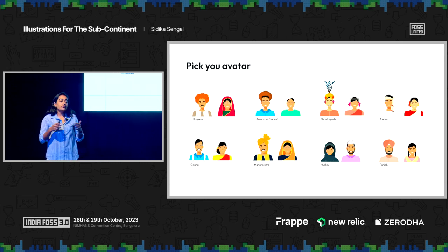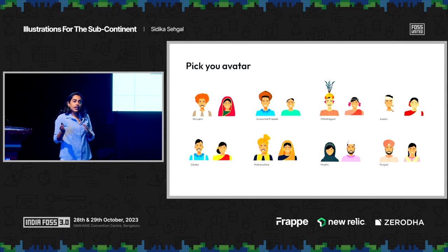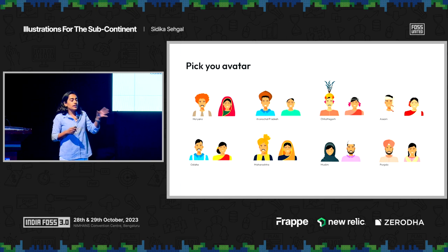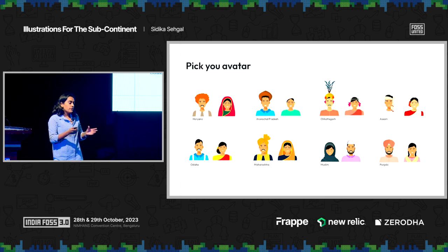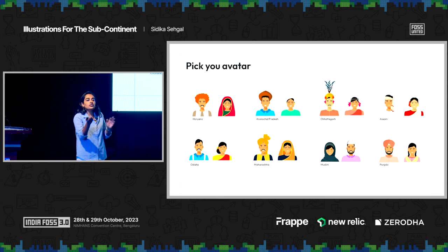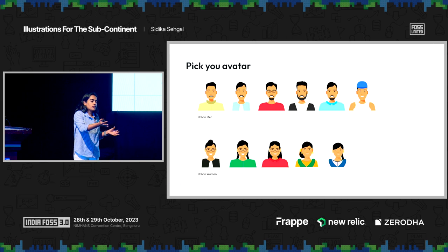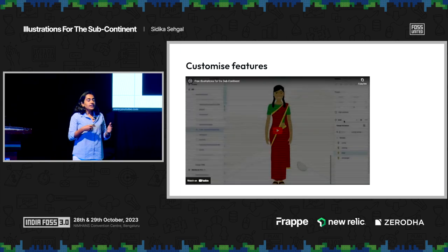When we started doing research for Subcontinental, we looked at photographs and found that we couldn't create just one Indian man and one Indian woman. Across the country, people look different, dress differently, and accessorize differently. So we created avatars for all the Indian states, and we also covered different ethnicities — you will see a Punjabi man and a Punjabi woman, a Muslim man and a Muslim woman. We also created avatars around professions — urban men and women, a construction worker, a lawyer, a teacher, a student.